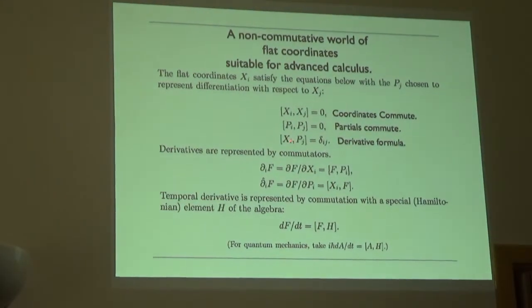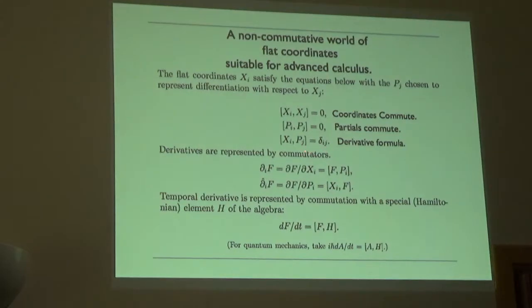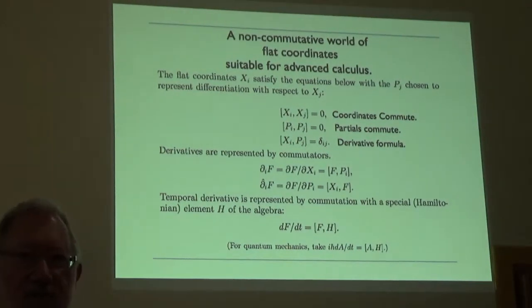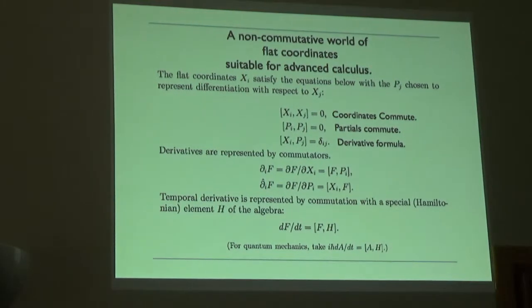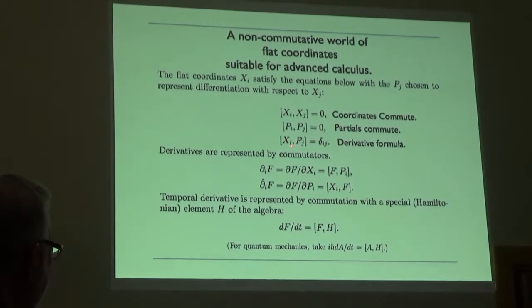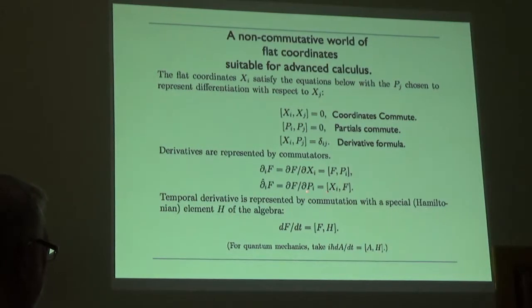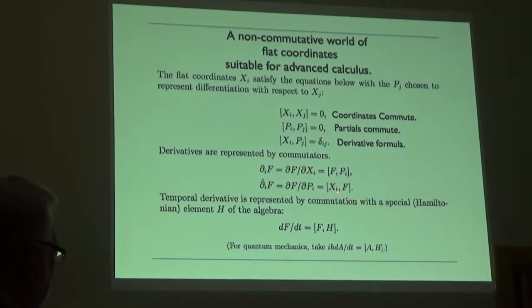We have [xi, pj] = delta_ij, which means that the derivative of xi with respect to xi is 1, as it should be, and the derivative of xi with respect to xj when j is not equal to i is 0. This is just ordinary advanced calculus rewritten with commutators. Because of the symmetry, I can also let it include the derivatives with respect to the pi's, because they're delta_ij and the xi's. When you take a partial with respect to pi, you're involved with commutators with the xi's, and it still works out, delta_ij, as it should.